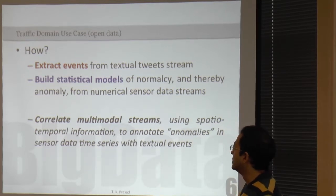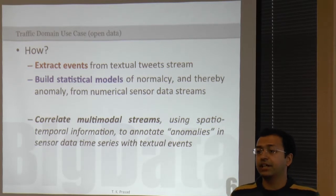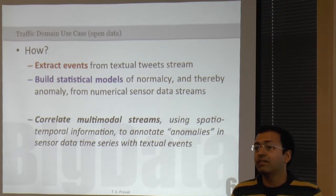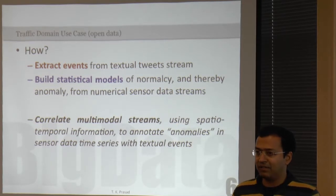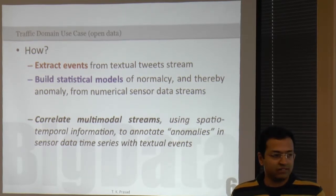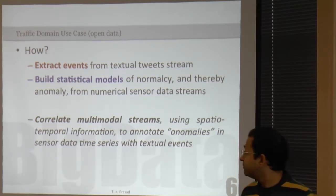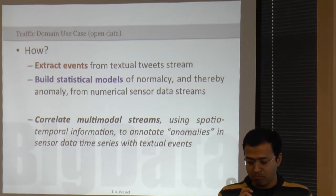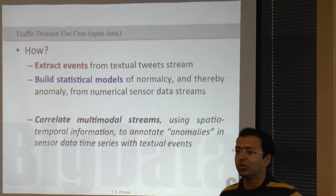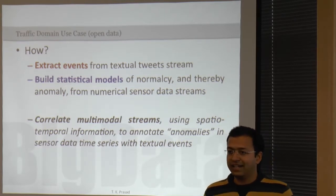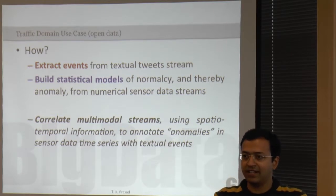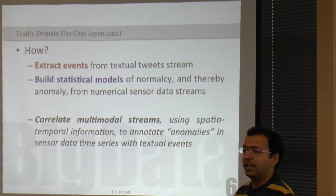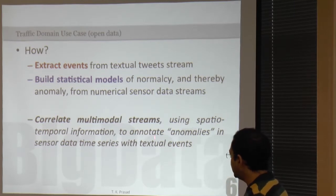Here are the three things I want to talk about today — how to achieve this integration of sensor and social data. First, we need to extract events: we have a lot of Twitter data but we don't know what events really exist, because there is a lot of noise. Second, we need to model the sensor data — without modeling it, you don't know when there is deviation from normalcy. The idea is to describe the sensor data using a model and use those models to find out if there is an anomaly. Third, use the extracted events to explain those anomalies.